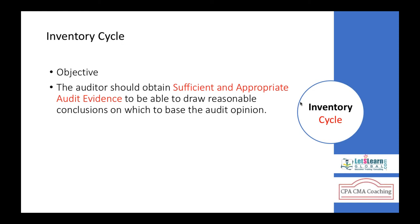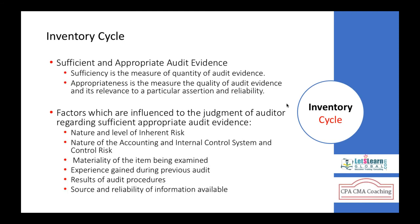In the inventory cycle, the main objective is how the auditor obtains sufficient and appropriate evidence to draw conclusions, based on which we give an audit opinion. We should get sufficient and appropriate audit evidence so that we are comfortable in giving the audit opinion.